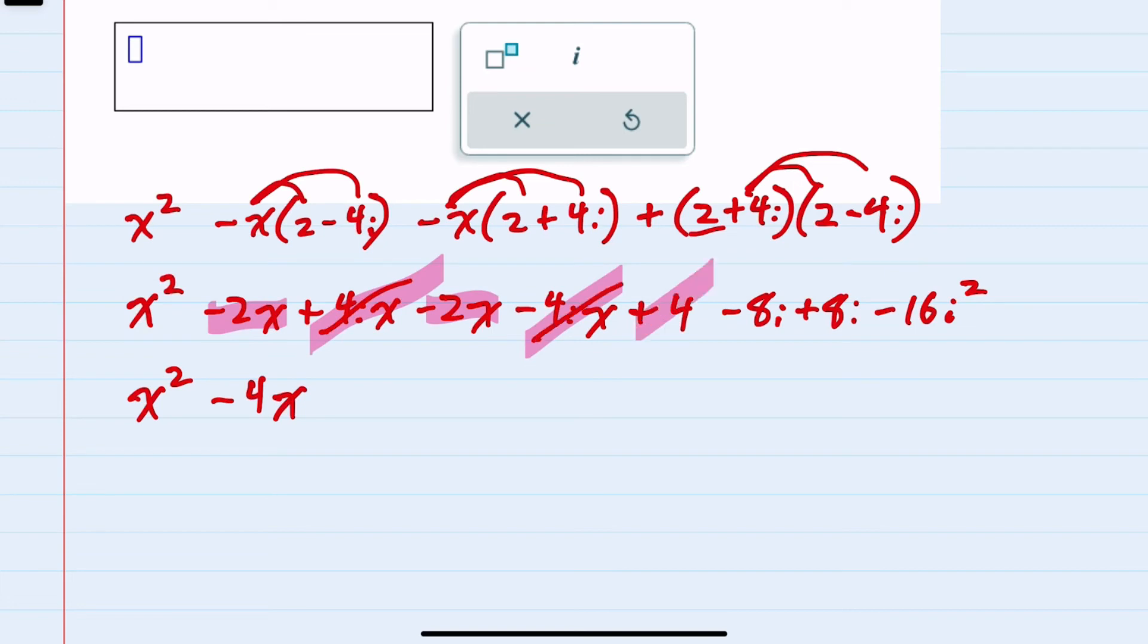I have the one whole number here, plus 4, and then a minus 8i and a plus 8i. Those also combine and cancel. And then we have the minus 16i squared.